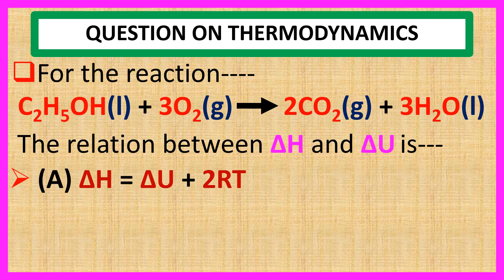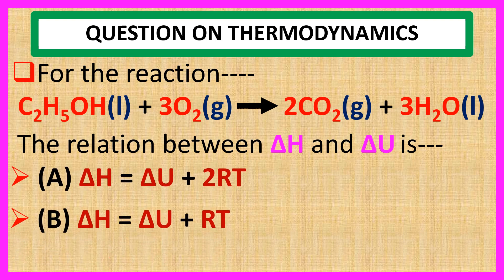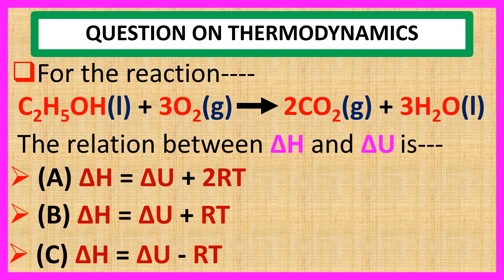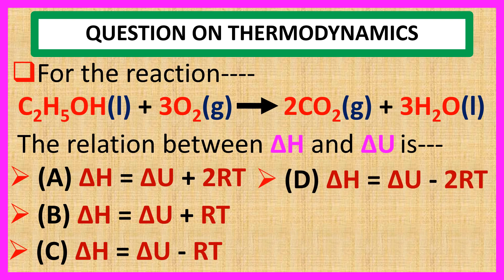Choices are A: del H is equal to del U plus 2RT. B: del H is equal to del U plus RT. C: del H is equal to del U minus RT. And D: del H is equal to del U minus 2RT.